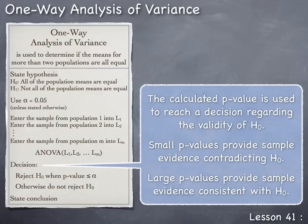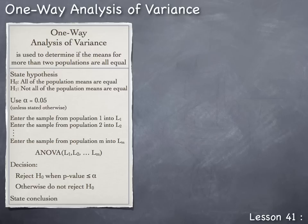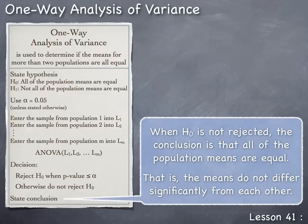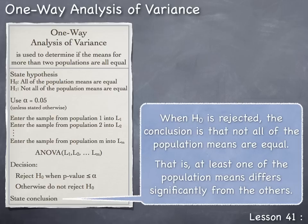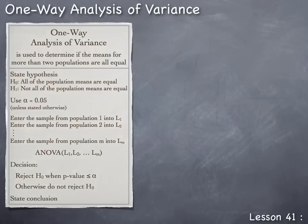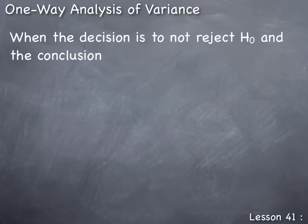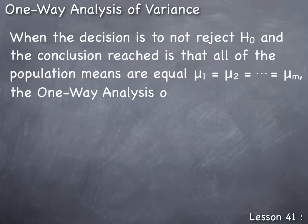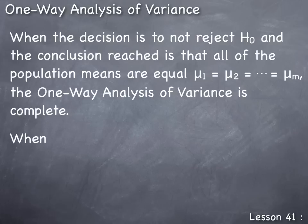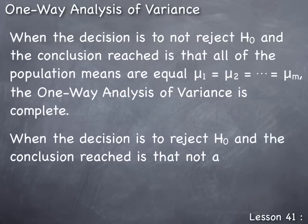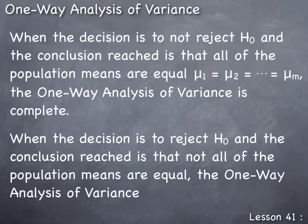Now that we have made our decision, we need to state the conclusion interpreting that decision. When H₀ is not rejected, the conclusion is that all of the population means are equal — that is, the means do not differ significantly from each other. When H₀ is rejected, the conclusion is that not all of the population means are equal — that is, at least one of the population means differs significantly from the others. If H₀ is not rejected, the one-way analysis of variance is complete. If H₀ is rejected, the analysis is continued.